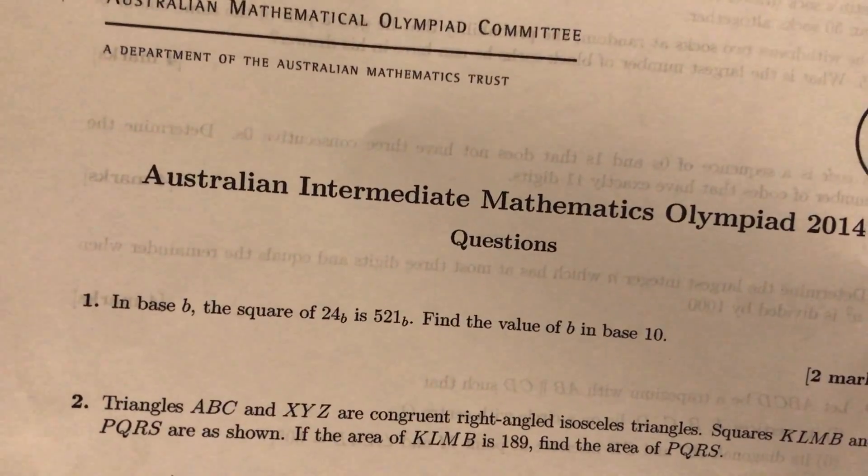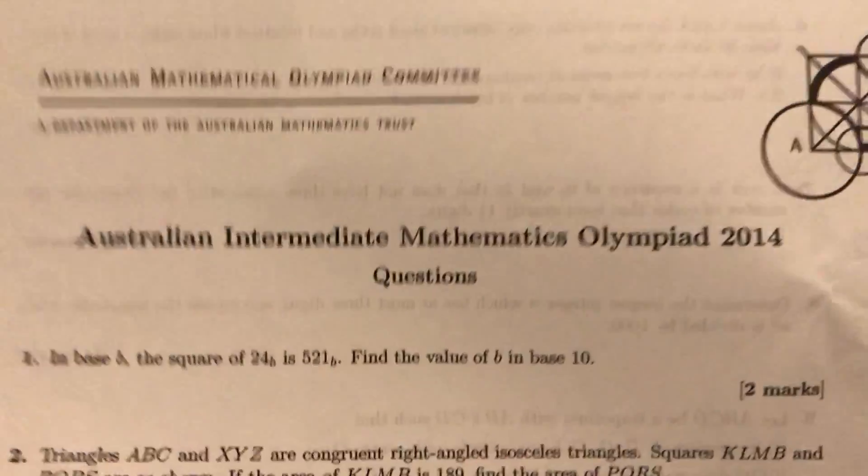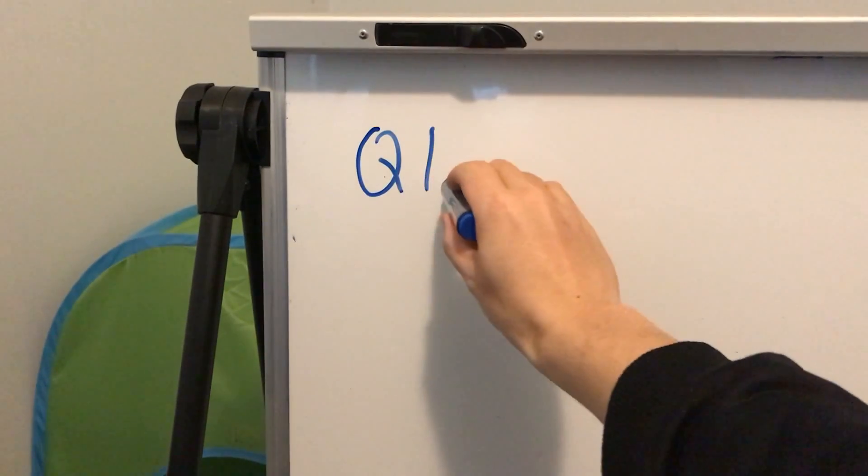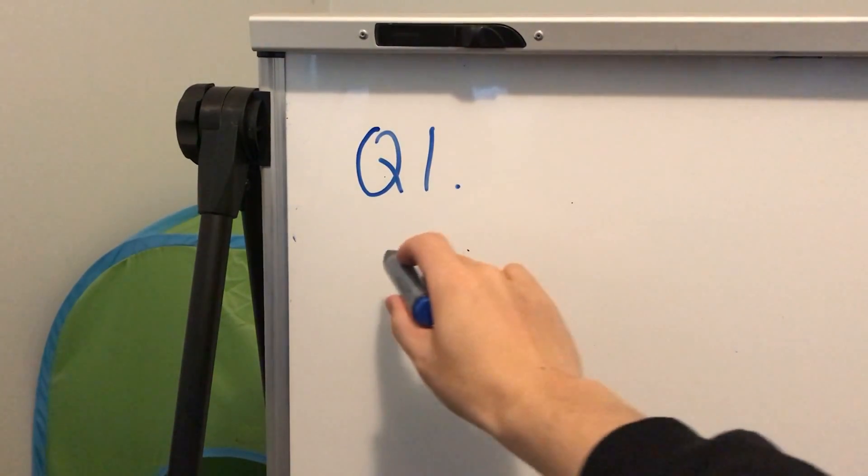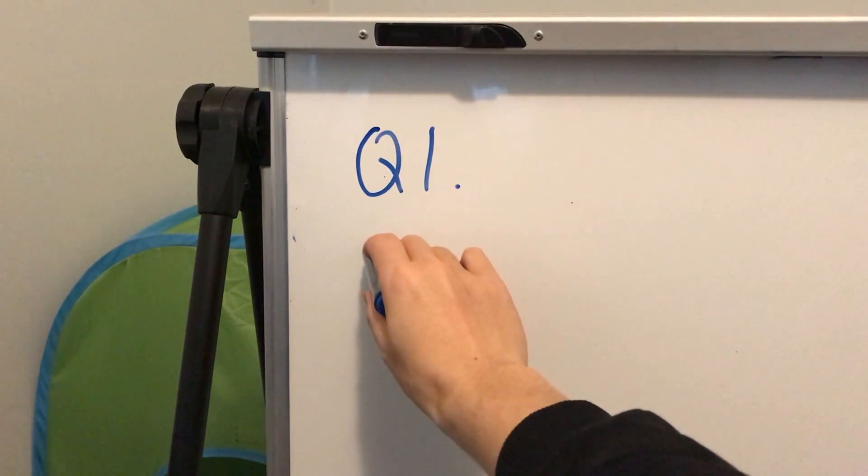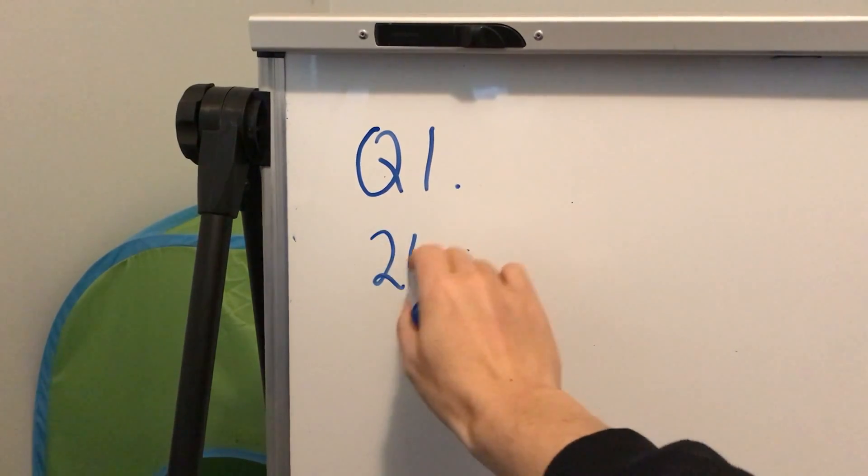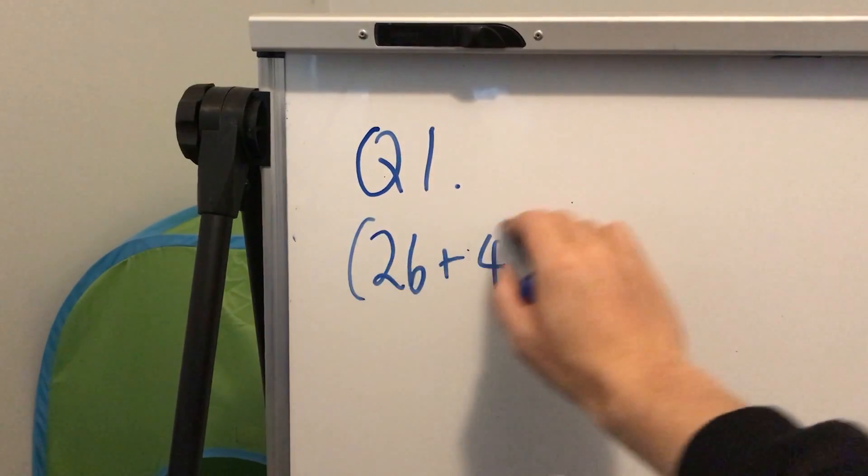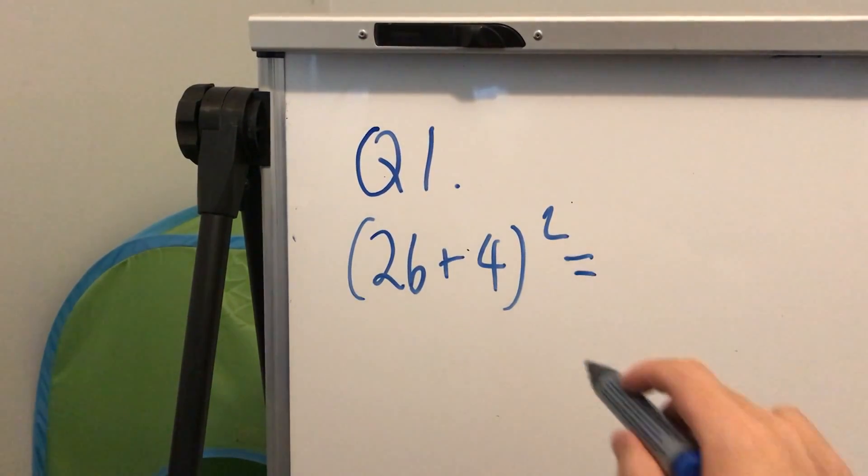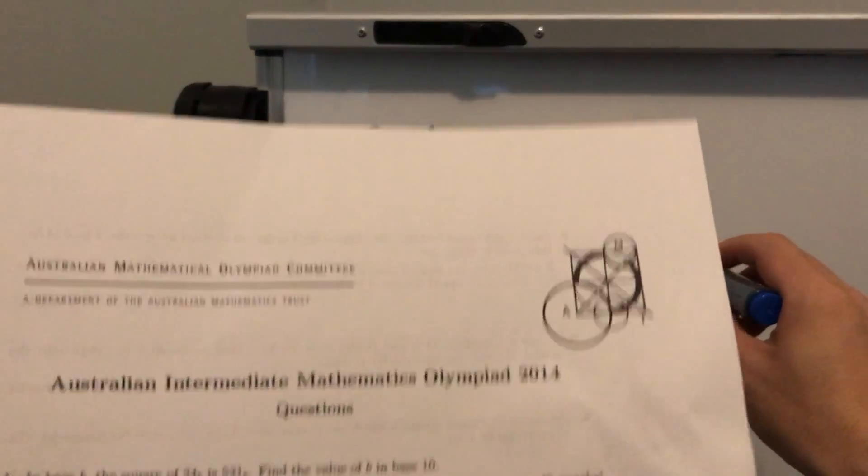If you can guess it really quickly, that's great, but doing it normally is pretty quick too. So you get question 1: 24 in base B squared means (2B + 4) squared equals 521.